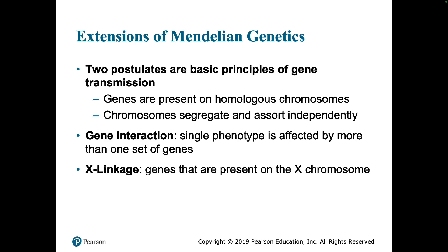In this section, we're going to talk about some extensions of Mendelian genetics — times where that classic dominant-recessive relationship doesn't always explain the expression patterns that we see. For Mendelian genetics, the idea is that genes are present on homologous chromosomes. You may have different alleles on each chromosome, or you might have the same allele if you're homozygous dominant or recessive, or you're heterozygous, and that chromosomes can segregate and assort independently.